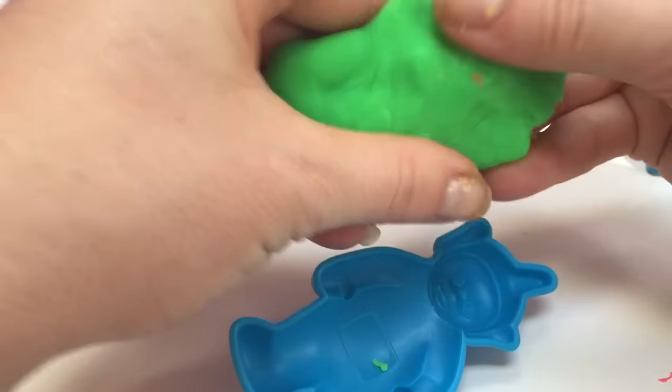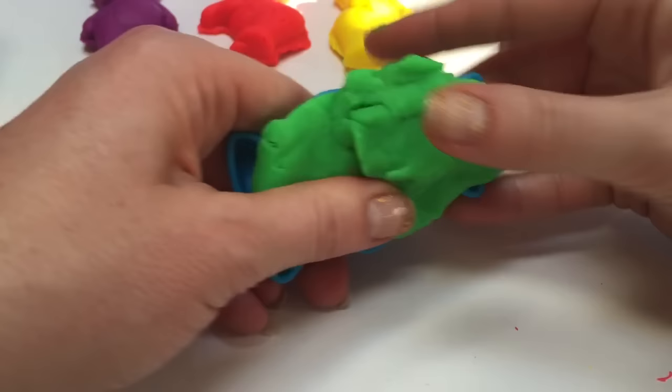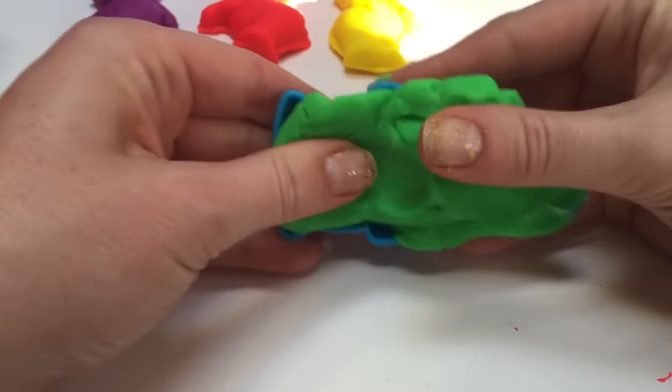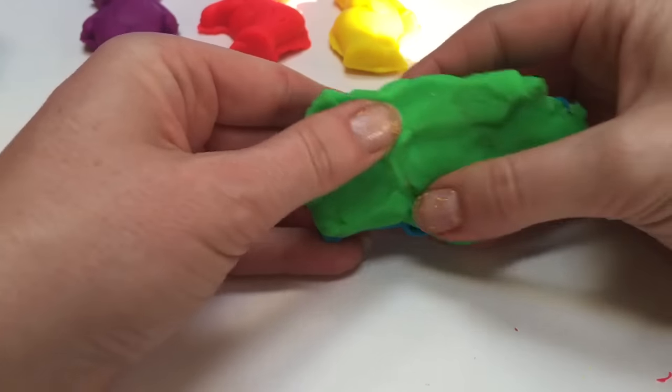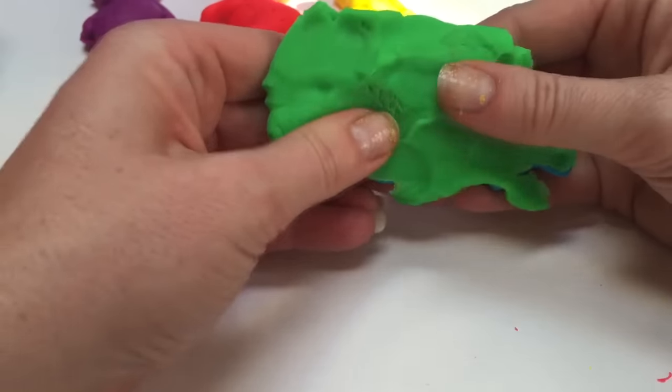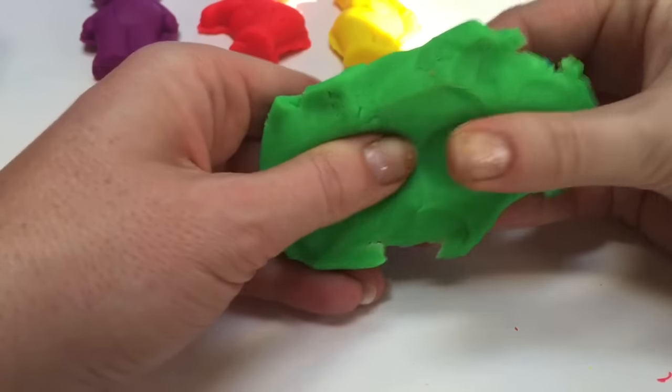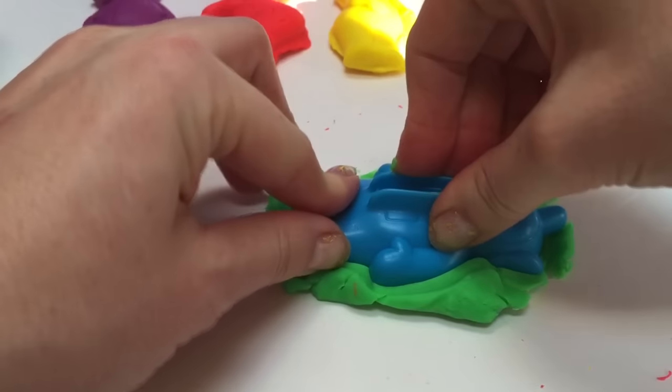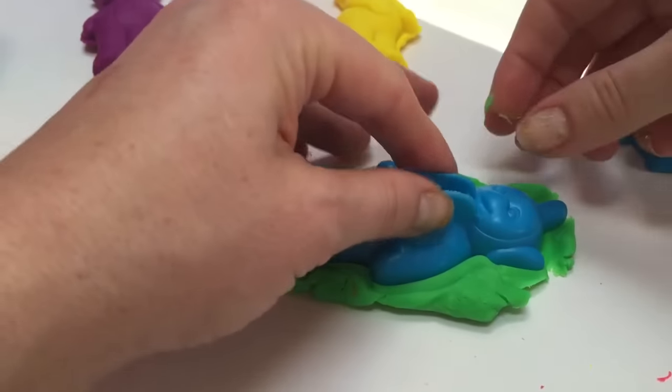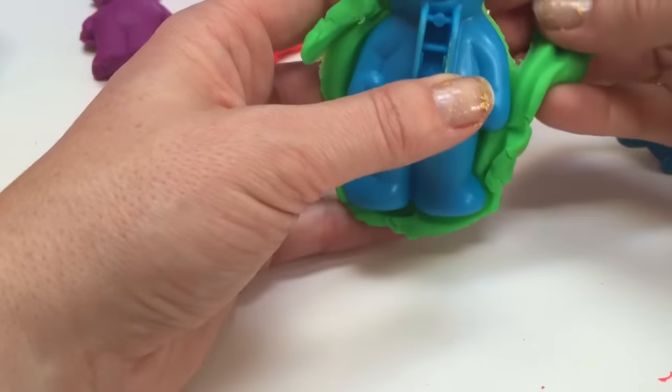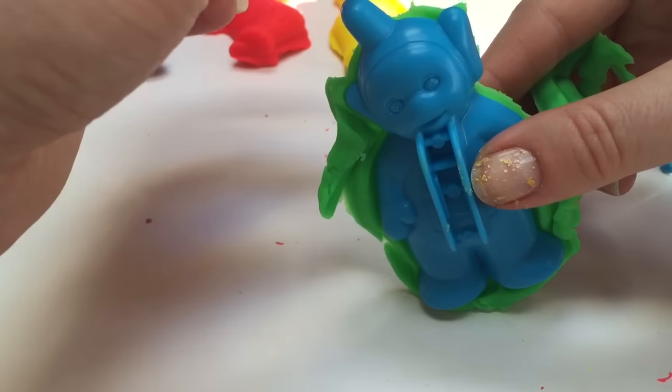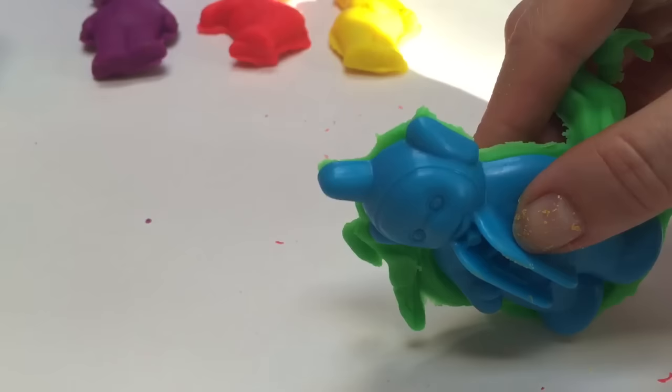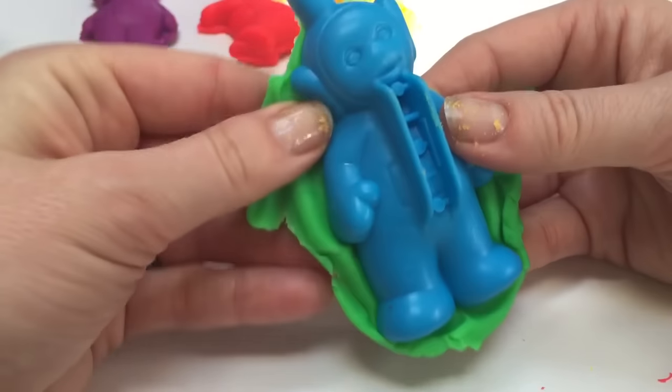There we go. Push in. We're making Play-Doh cookies. Push, push. Take off the extra. Oh, we got a little cat hair in there. See the cat hair? That's going to happen if you have animals. We have our little kitty, and her fur gets everywhere. That's okay, we love her and she's worth it.